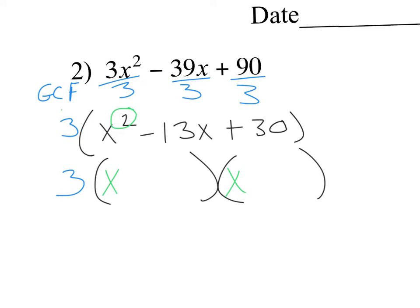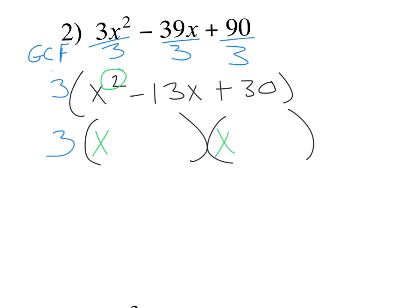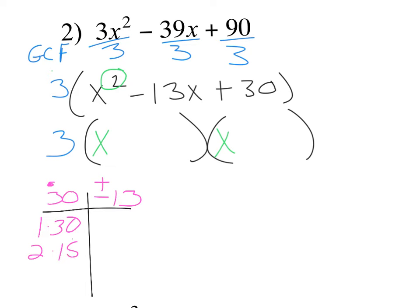Turn it down please. Then you make that little table: what do you multiply to get c — which is 30 — that will also add to get negative 13? Give me some factors of 30: one and 30, two and 15, three and five, five and six.